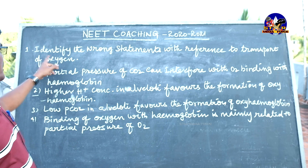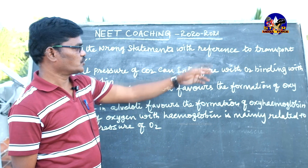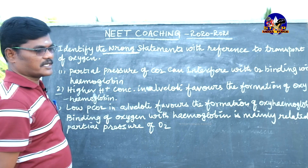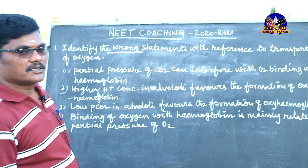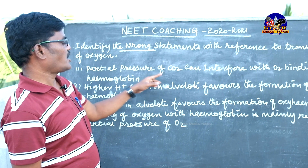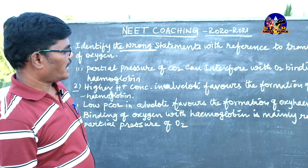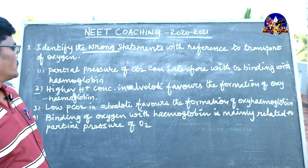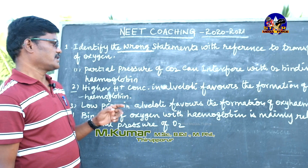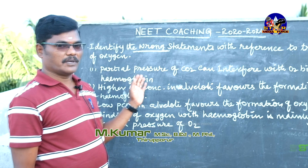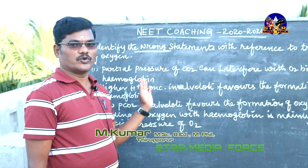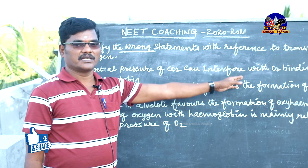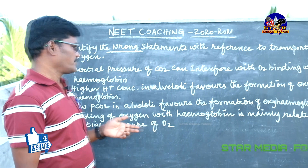Identify the wrong statement with reference to the transport of oxygen. You have to find out the wrong statement from the four options. First option: the partial pressure of carbon dioxide can interfere with oxygen binding with hemoglobin. This is a correct statement because between the alveoli and the blood vessels, the partial pressure of CO2 and oxygen exchange takes place.